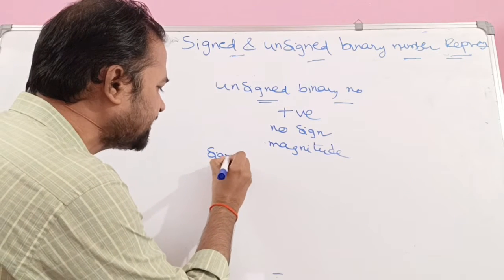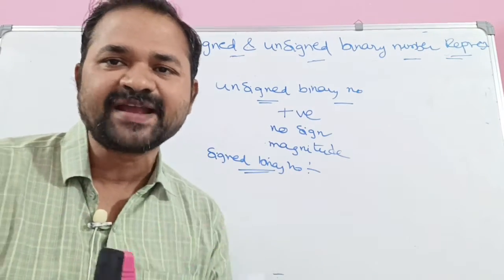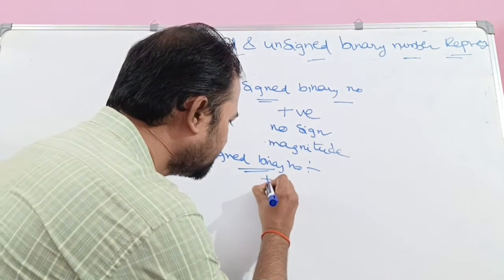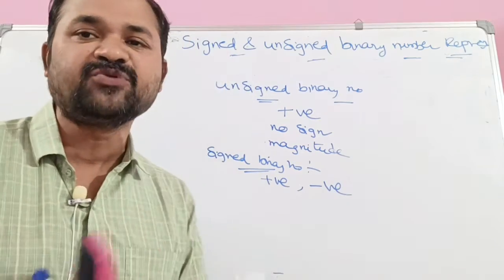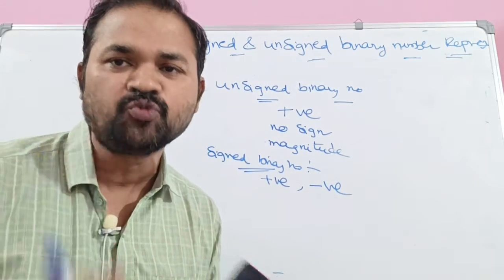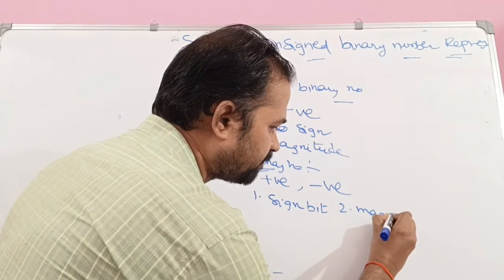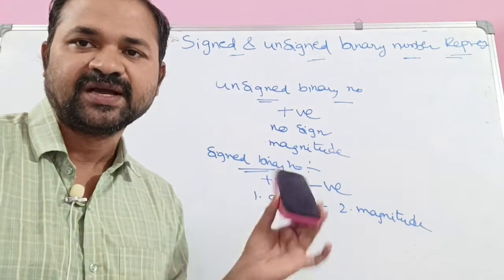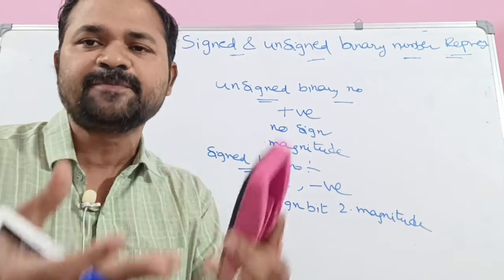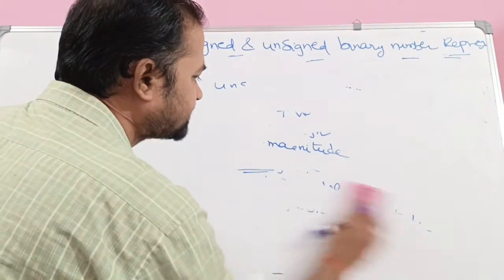Whereas, let us see what a signed binary number is. Signed binary number means we will have a sign before the binary number, so it may be either a positive number or negative number. By using signed representation, we can represent both positive as well as negative numbers. Signed binary numbers are made up of two parts: the first part is the sign bit, and the second part is magnitude. The sign bit specifies whether the number is positive or negative, whereas the magnitude represents the binary number.